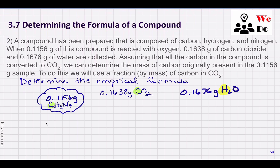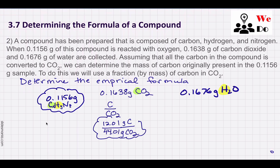We're assuming the carbon in the CO₂ came from the compound, and the hydrogen in the water came from the compound. The first new thing we're going to do is set up a mass fraction. For carbon, we compare the mass of just the carbon in CO₂ to the mass of the CO₂. It's like a percent composition problem but without dividing by 100 and multiplying. In 44.01 grams of CO₂, there are 12.01 grams of carbon.